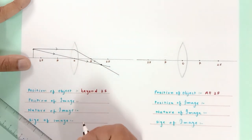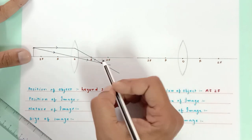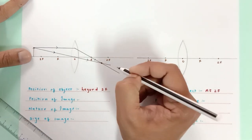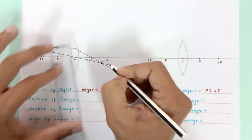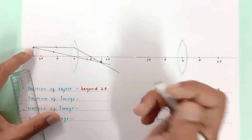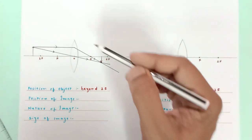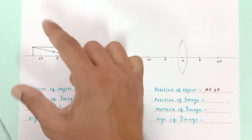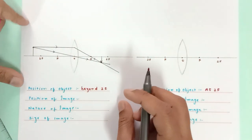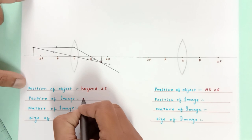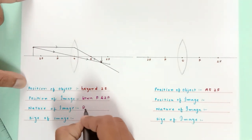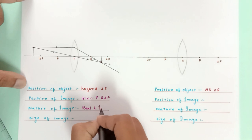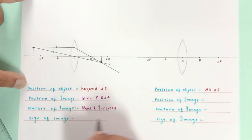The rays meet at a point between f and 2f, so the image will be between f and 2f. Since the refracted rays are meeting, it will be a real and inverted image — an inverted image means the head of the image is down. The size of the image, as we can see, is smaller than the object, so we write down 'smaller than the object' or 'diminished.' Position of image: between f and 2f. Nature: real and inverted.